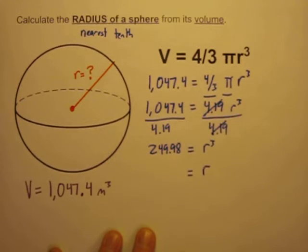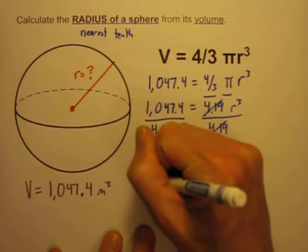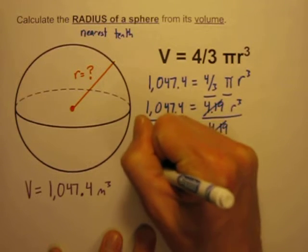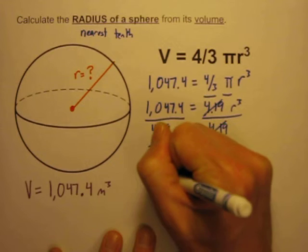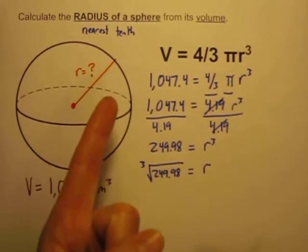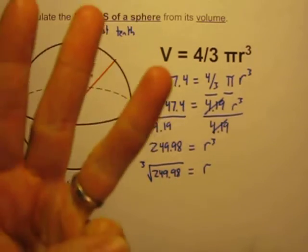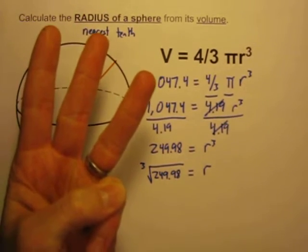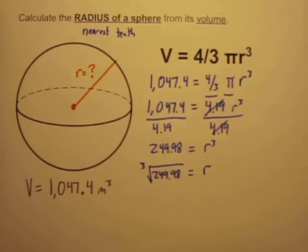So if I take the cube root of both sides, I'll get r over here on the right, and I will get the cube root of 249.98 over here. In other words, what times itself times itself is equal to 249.98. Thankfully, the calculator can do that for me.